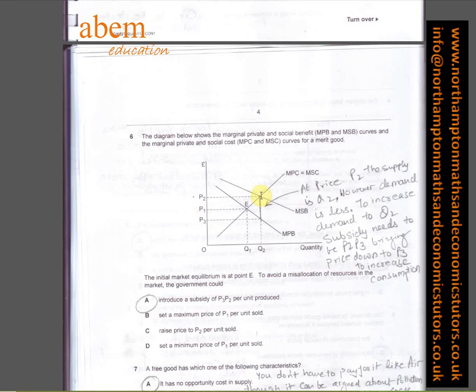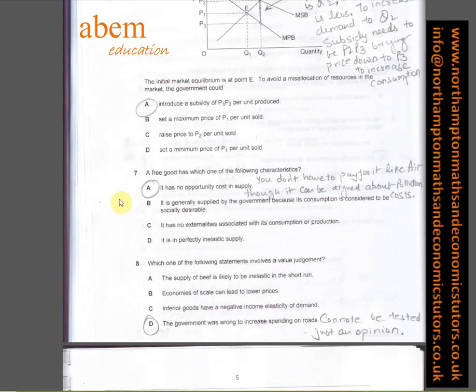At P2, the suppliers are incentivized to supply Q2, and at P3 the consumers are willing to buy Q2. So at this price, P2 and P3 should be the subsidy that the government should be willing to give to the producers. Part A is the answer.